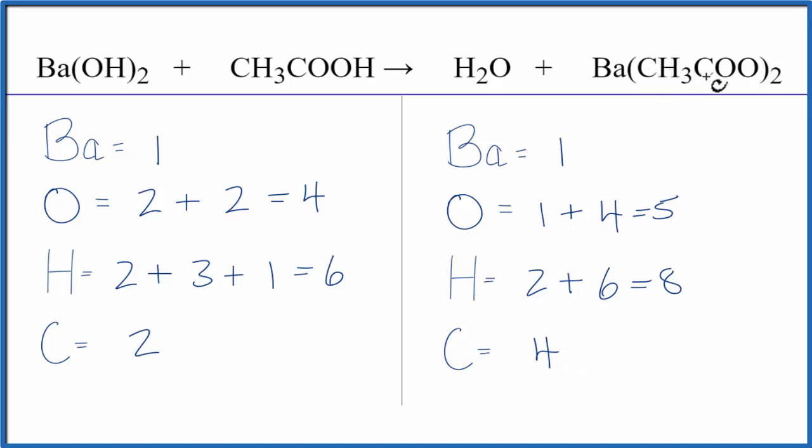I can see I have this CH3COO here and it repeats here, but on this side I have two of them. So I could put a two as my coefficient. That would solve the carbons, and we'll see what it does with the other elements. One, two, times two gives us four.